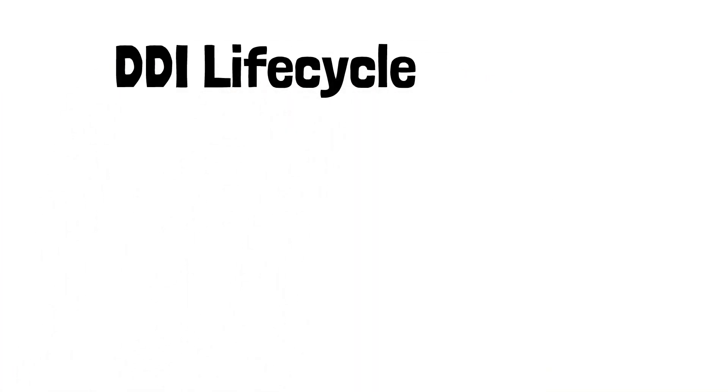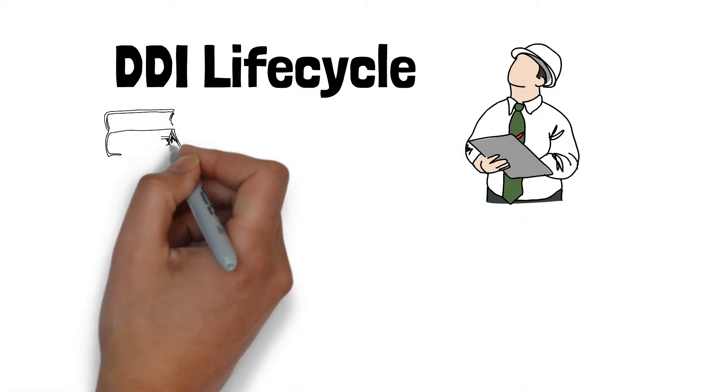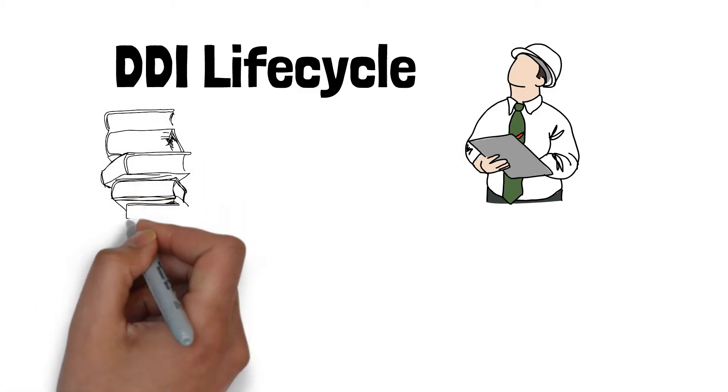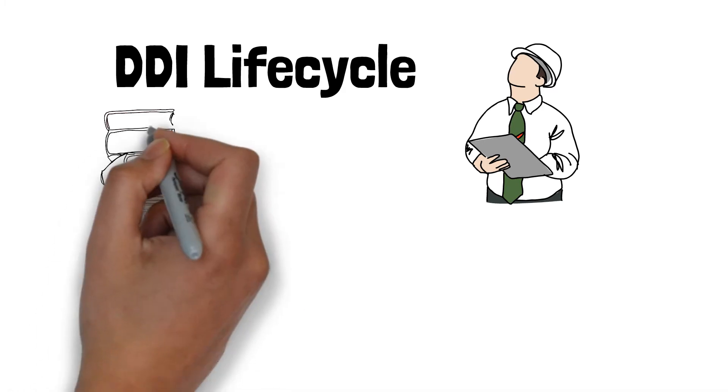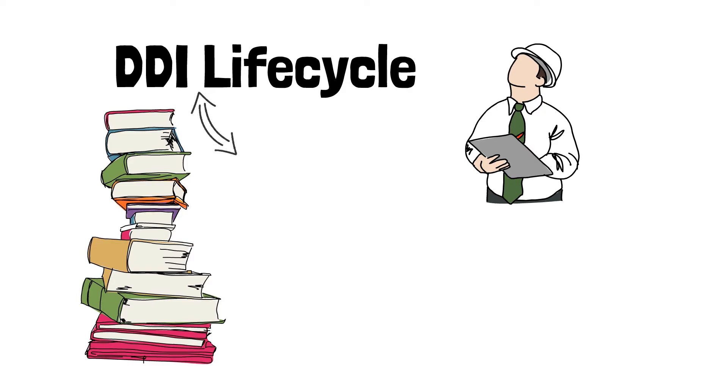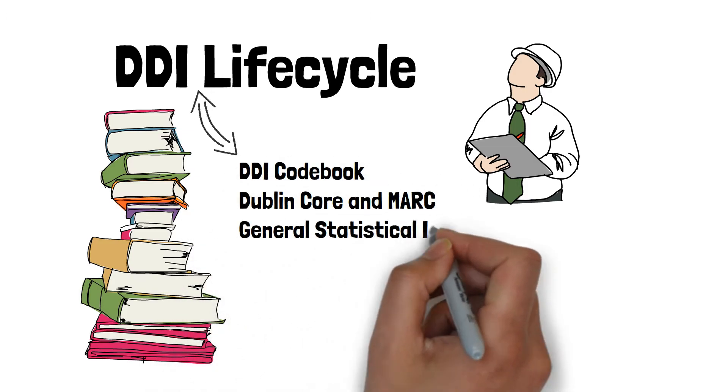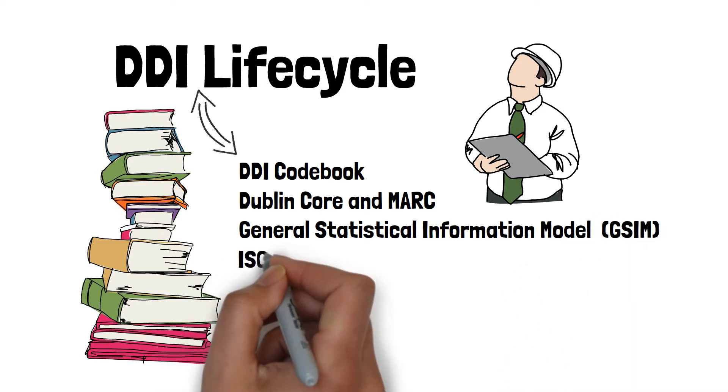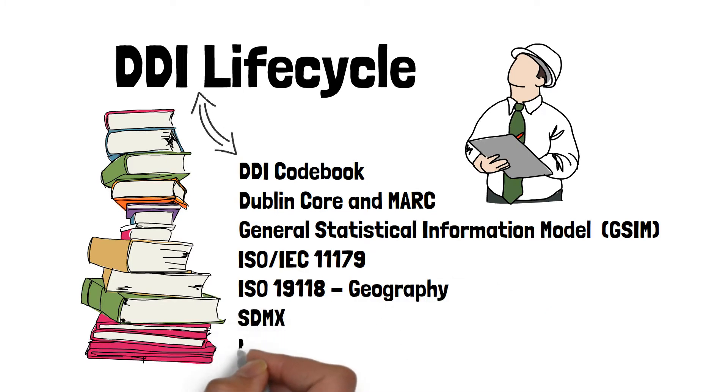In constructing DDI Lifecycle, special care was taken to evaluate and review over 25 standards, as well as previous versions of DDI, in order to provide clear mapping to the contents of outside standards and to incorporate content where applicable. DDI Lifecycle currently has mapped relationships to the following standards: DDI Codebook, Dublin Core and MARC, General Statistical Information Model, ISO 11179, ISO 19118 Geography, SDMX, METS, and PREMIS.